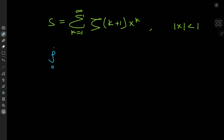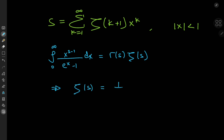That relationship is: the integral from 0 to infinity of x to the s minus 1 divided by e to the x minus 1, dx, equals gamma(s) times zeta(s), where s is such that its real part is greater than 1. This implies that the zeta function equals 1 over gamma(s) times the integral from 0 to infinity. Since I'm already using x in the summation, I'll use u as the dummy variable, giving u to the s minus 1 divided by e to the u minus 1, du.